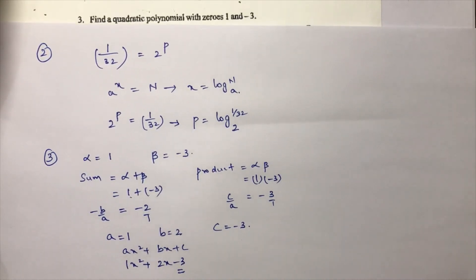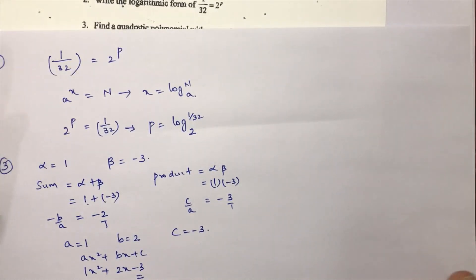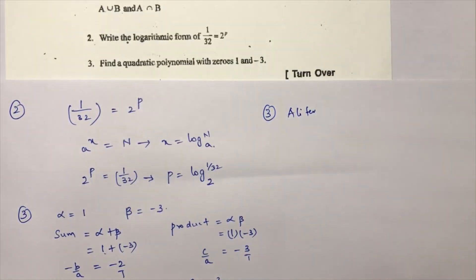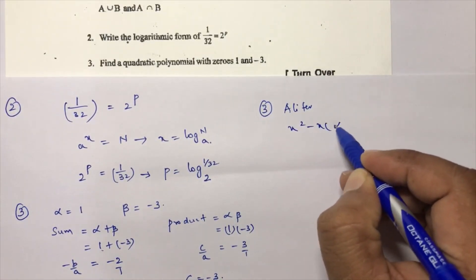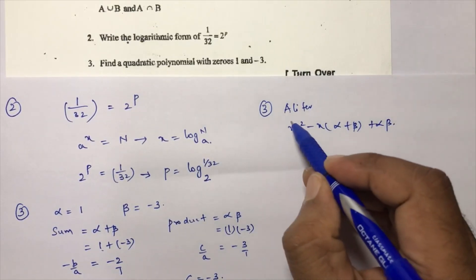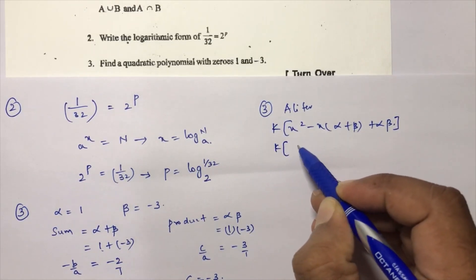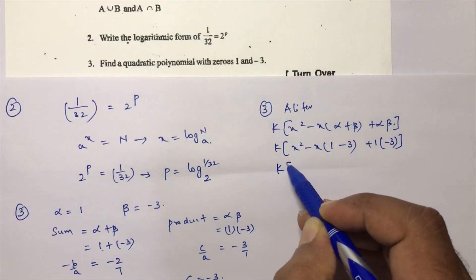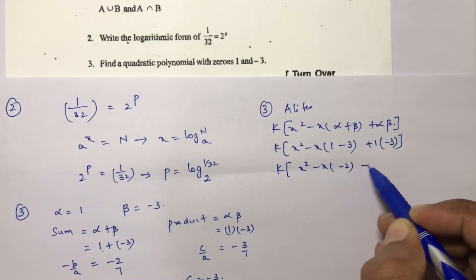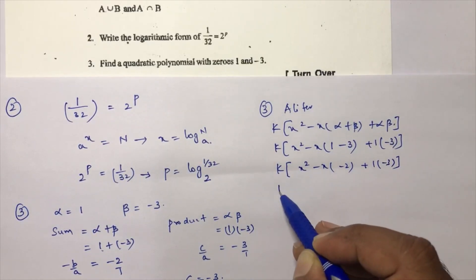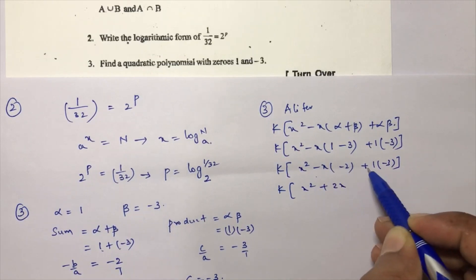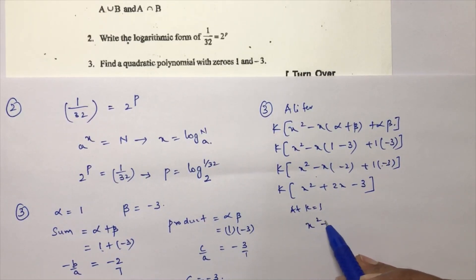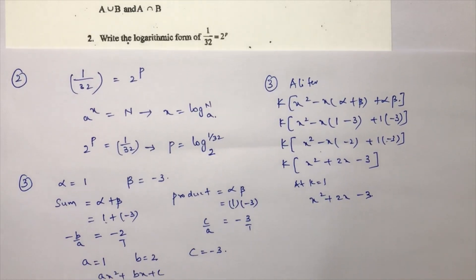Alternate method: use the formula k[x² − x(alpha + beta) + alpha·beta]. Substituting: k[x² − x(1 + (−3)) + 1×(−3)] = k[x² − x(−2) + (−3)] = k[x² + 2x − 3]. Setting k = 1, the polynomial is x² + 2x − 3. Both methods give the same result.